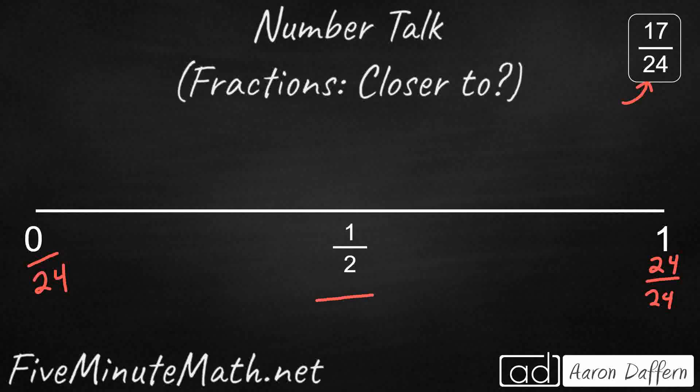The halfway point here can sometimes be tricky, but look, we have an even number here. So what's half of 24? Well, most of us know that, 2 times 12. So now I've got my 24ths. I've got 0/24, 12/24 halfway through, I've got my 24/24 over on the side.